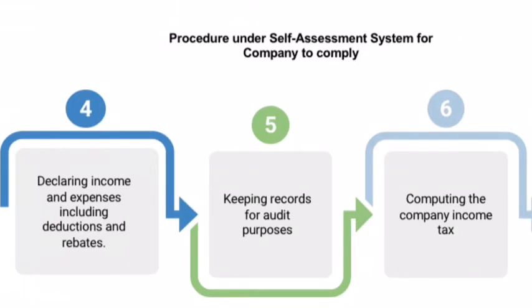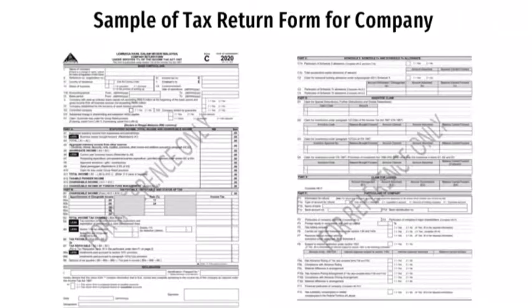Fourth, declare the income and expenses including deductions and rebates. Fifth, keeping records for audit purposes. The taxpayer of the company should fill in the tax return form and submit it to the IRB. These are the sample of Form C that should be filled by the company taxpayer and submitted within seven months from the closing date of the company's year and account.